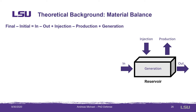Think of the reservoir as a box thousands of feet below the ground. The difference between the final and initial masses of the box across a time interval is equal to the mass flowing into the box minus the mass flowing out, plus the mass injected through a well, minus the mass sucked out through the well, added to whatever mass was generated or destroyed within the box.